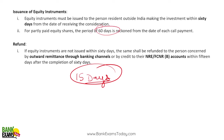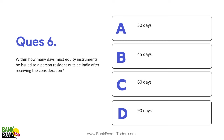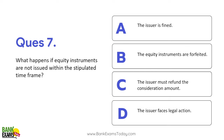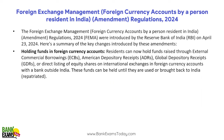If you do not allot the shares, 15 din ke andar paisa waapas kar dijiye. Within how many days must equity instruments be issued to a person resident outside India after receiving the consideration? 60 days — 60 din ke andar allotment honi chahiye. Aur agar allotment nahi hui, toh 15 din mein paisa waapas kar dijiye.